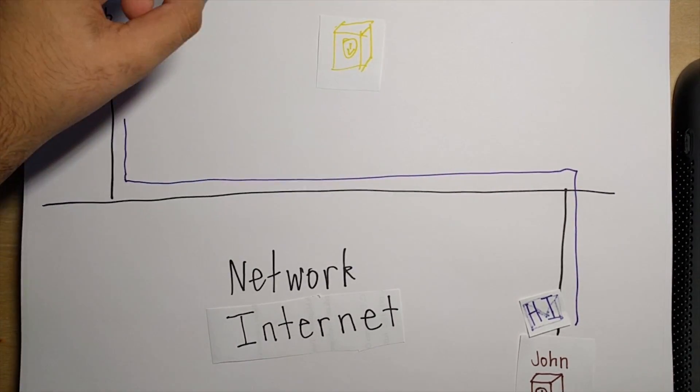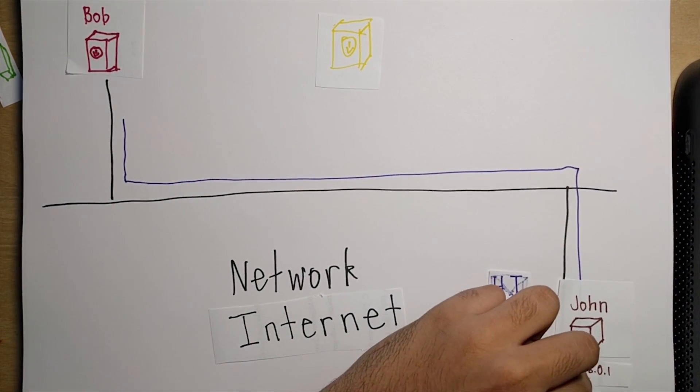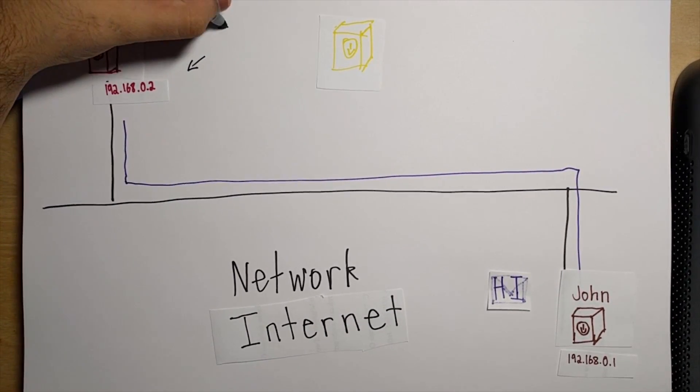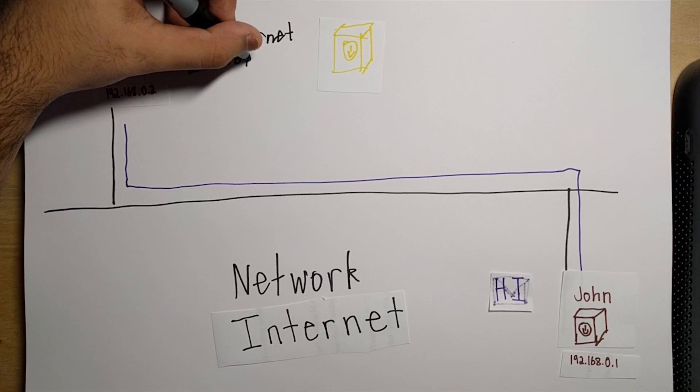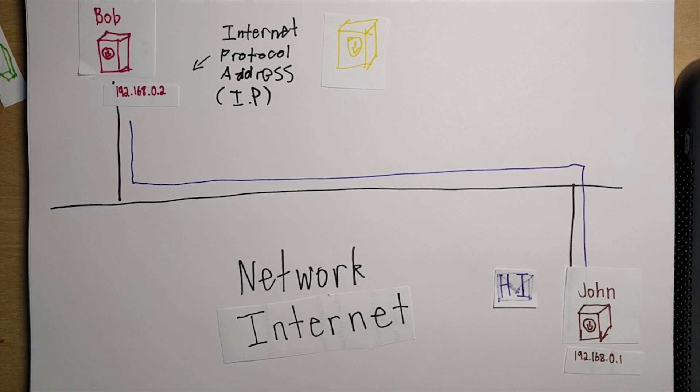Now we add a third computer. How does computer 1 know how to send information to computer 2? Obviously, it needs to know what path to follow. It needs an address. We call this an IP address, which stands for internet protocol. The computers are called servers.